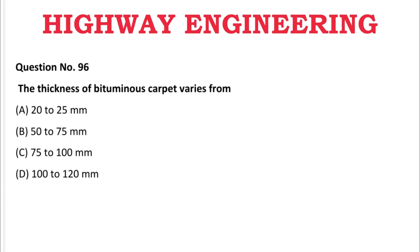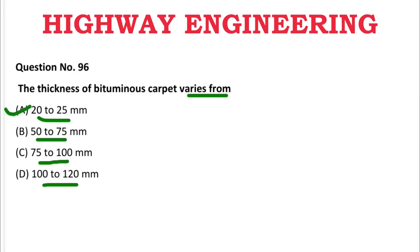Next question: The thickness of bitumen carpet varies from — A: 20 to 25 mm, B: 50 to 75 mm, C: 75 to 100 mm, D: 100 to 120 mm. The correct answer is A, 20 to 25 mm.